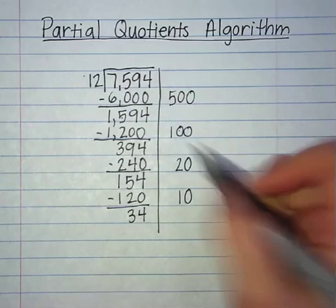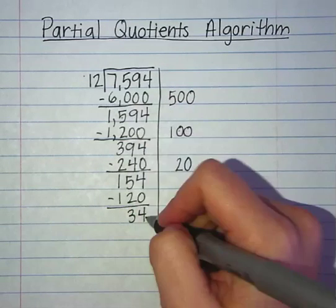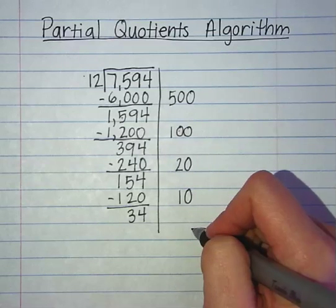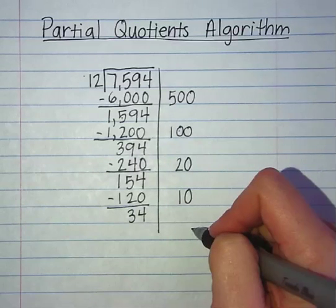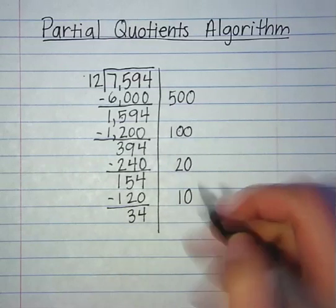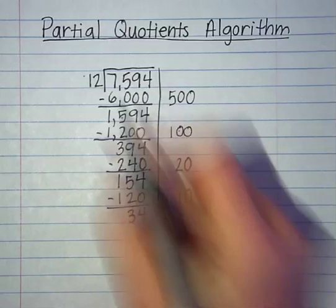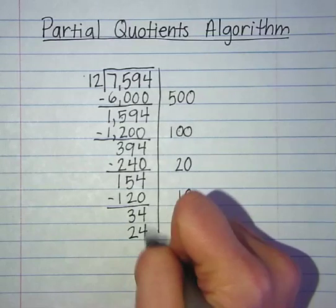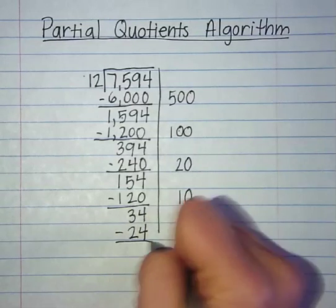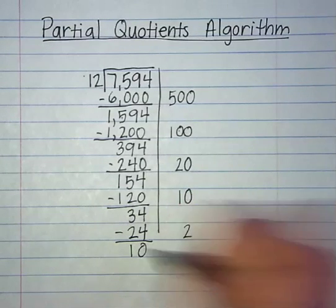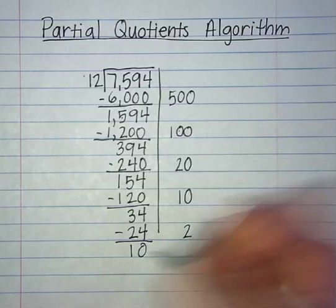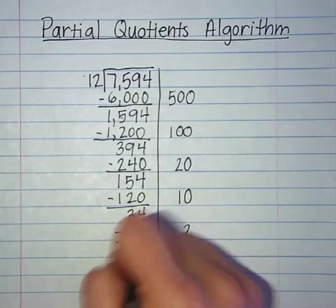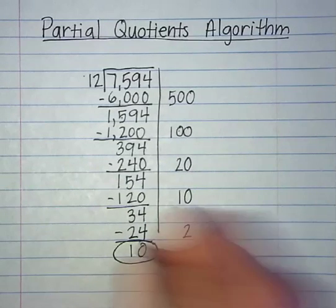This should be easy. How many times does 12 go into 34? If I put 3, then 3 times 12 is 36, so I know that would be too much, so I'm going to do 2. 2 times 12 gives me 24. Subtract, and that leaves me with 10. Can 12 go into 10? Nope. So this is going to be my remainder.